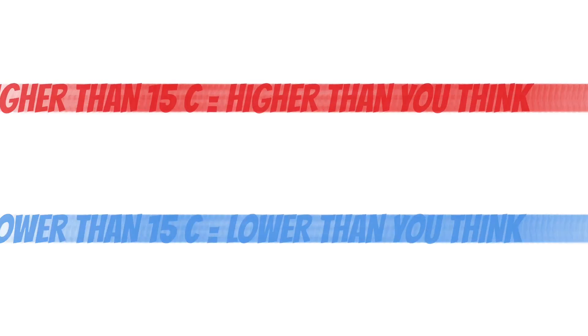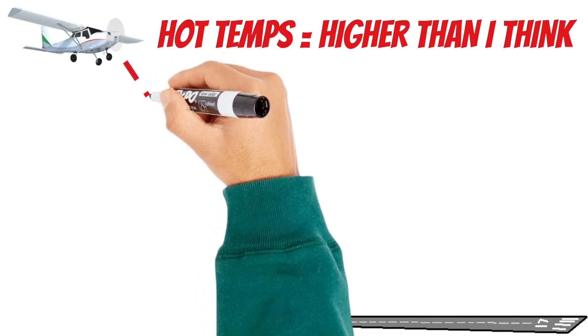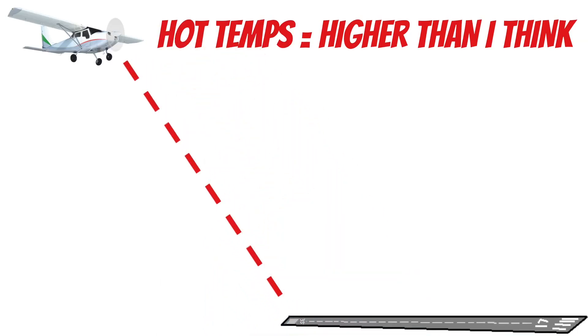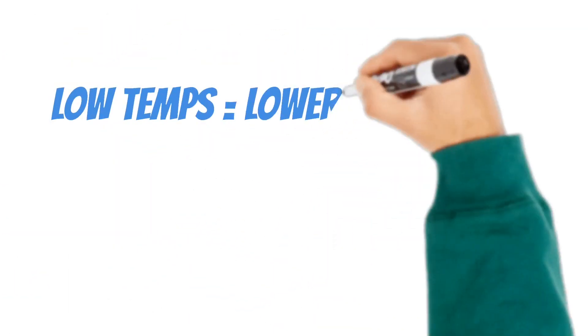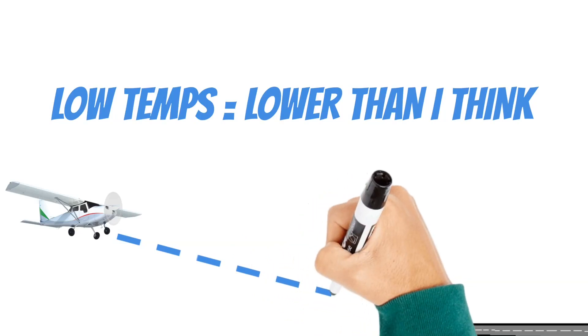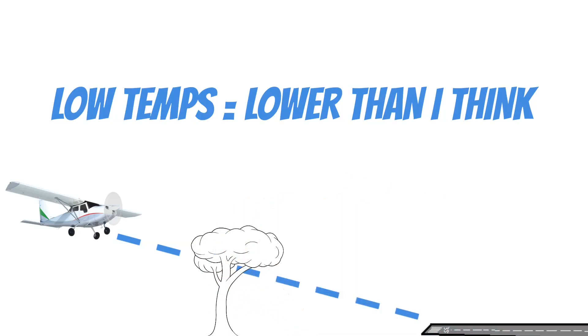So right now you're probably thinking, okay, hot temperatures, I'll be higher than I think. That's really not a big deal. Worst case, I can do a forward slip or something to get myself down quicker. But at temperatures lower than 15 degrees, I'm lower than I think I am. And you can see how this could be a problem when you're coming in for a landing. Especially if you're working on your instrument rating and you're not able to look outside.